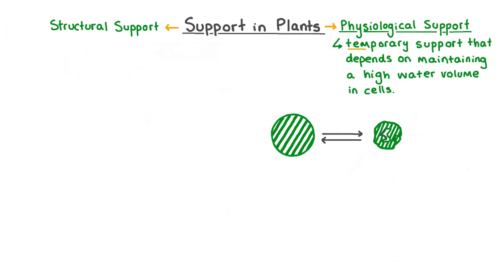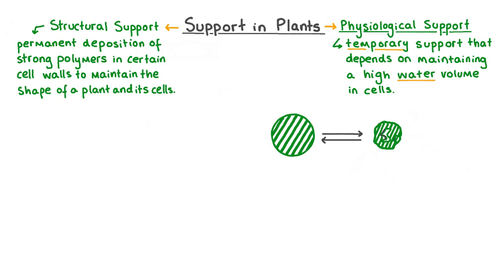Physiological support is temporary and it depends on maintaining a high volume of water in the plant cells to keep their shape. Structural support, however, is permanent. It involves the deposition of strong polymers into certain cell walls in specific parts of the plant, which maintains the shape of those cells and of the plant as a whole. The pea shrinking and swelling displays an example of a physiological support mechanism, and we will look at this support method first.